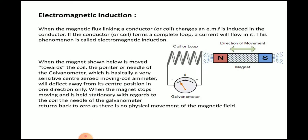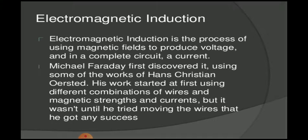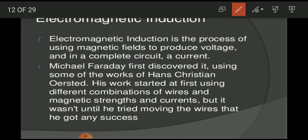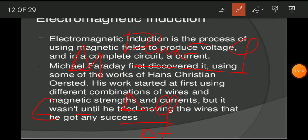Faraday's work states that whenever there is a change in magnetic flux (Δφ), an induced EMF will be produced. For a single loop, the induced EMF equals Δφ/Δt. For more loops, the induced EMF equals NΔφ/Δt, where N is the number of loops.